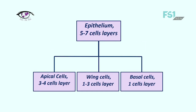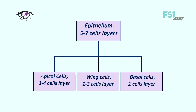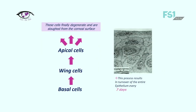So, epithelium. As we know already, the epithelium consists of five to seven cell layers, which are apical cells, wing cells, and basal cells. Basal cells are located on the surface of the basal membrane, and normally there is a corneal cell circulation in which the basal cells proliferate into wing cells, wing cells in turn proliferate into apical cells, and within seven days these apical cells slough out from the surface of the cornea.